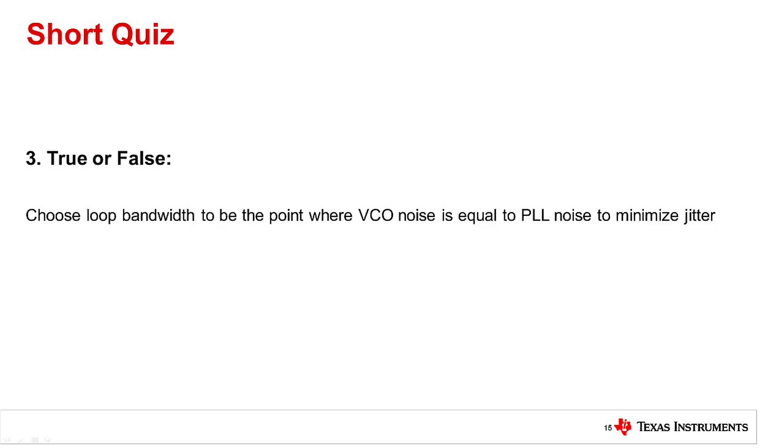True or false. Choose the loop bandwidth to be the point where the VCO noise is equal to the PLL noise to minimize jitter. The answer is true. By choosing it equal to this frequency, this minimizes the area under the curve, which therefore minimizes the jitter.